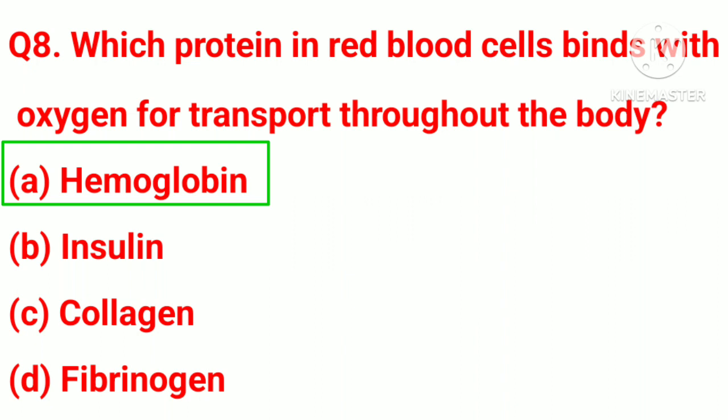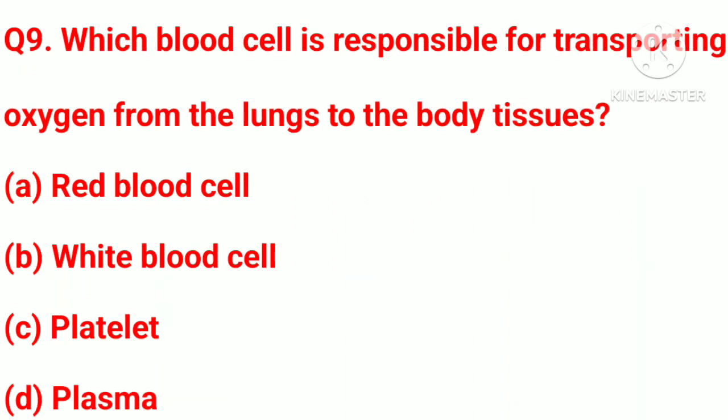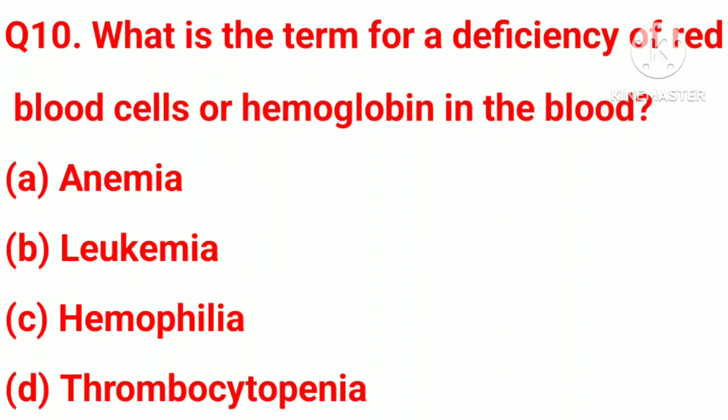Question number 9. Which blood cell is responsible for transporting oxygen from the lungs to the body tissues? Option A, RBC. Option B, WBC. Option C, platelet. Option D, plasma. Correct answer: Option A, red blood cell.